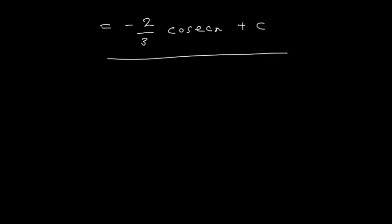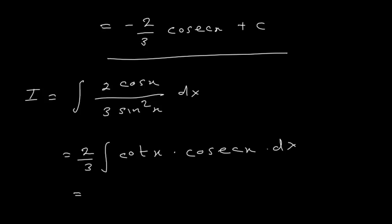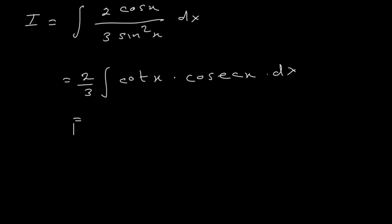Now the second way: I = ∫ (2cos(x)) / (3 sin²x) dx. Taking 2/3 out, cos(x)/sin(x) can be written as cot(x) and 1/sin(x) as cosec(x). The formula for integration of cosec(x)·cot(x) is -cosec(x). So the answer is -(2/3) cosec(x) + c. By using both methods we get the same answer.